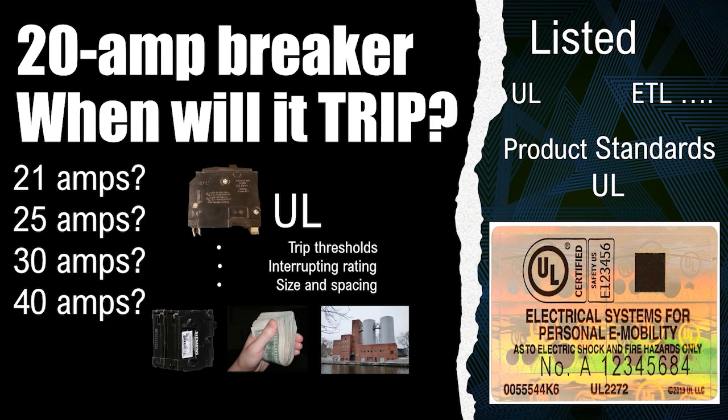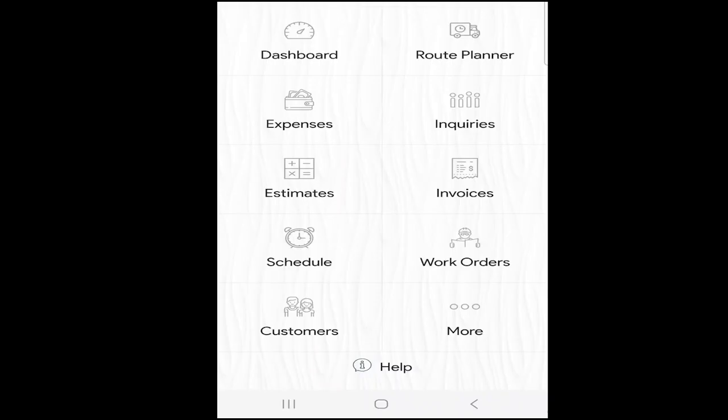And then once they manufacture this product, they physically send it back to somebody like UL or ETL, and then ETL or UL judges them based off of the UL standard. They pull the standard out, they have the product in their hand, and they make sure that it meets all these parameters. So let's go ahead and learn when will this circuit breaker trip.